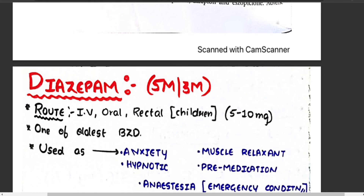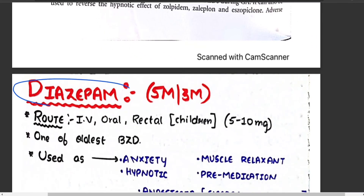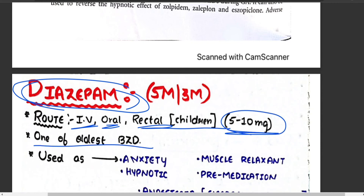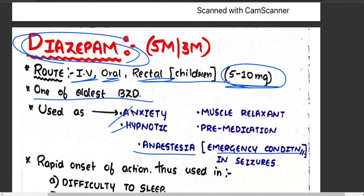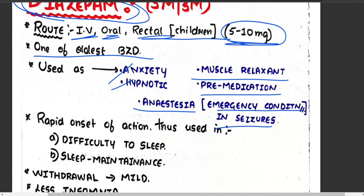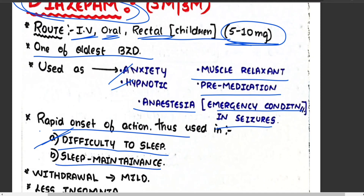Diazepam is a frequently examined drug. Routes of administration: intravenous, oral, rectal (in children); dose is 5–10 mg. It is one of the oldest benzodiazepines still in use. It is used for anxiety, hypnosis, anesthesia, emergency seizures/epilepsy/convulsions, muscle relaxation, and pre-medication. Diazepam has a rapid onset of action.